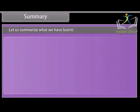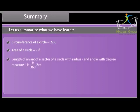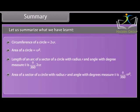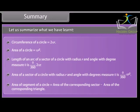Summary: Circumference of a circle equals 2 pi r. Area of a circle equals pi r squared. Length of an arc of a sector with radius r and angle theta (in degrees) equals theta/360 × 2 pi r. Area of a sector with radius r and angle theta (in degrees) equals theta/360 × pi r squared. Area of a segment equals the area of the corresponding sector minus the area of the corresponding triangle.